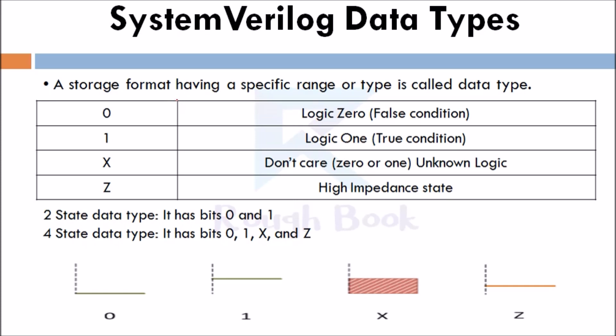So now, what values does the SystemVerilog variables can hold? There are like four states: 0, 1, x, and z. 0 is logic zero for false condition. 1 is logic one for true condition. x is unknown logic, it may be 0 or 1, therefore it is don't care. Z is a high impedance state. There are 2-state data types and 4-state data types. In 2-state data types, it has bits 0 and 1. In 4-state data types, it has bits 0, 1, x, and z.